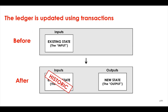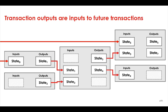If this transaction proposal is approved, then its input states are marked as consumed or historic, and that means they can no longer be used as inputs to future transactions, while the output states are created on the ledger and come to reflect the current state of the ledger. The output states from one transaction then become the input states of future transactions, meaning that they're marked as consumed or historic in turn, and this is how the ledger evolves over time.